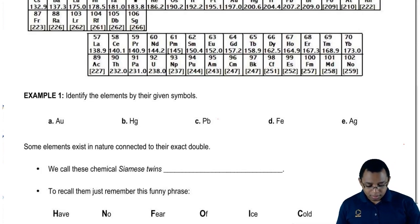Au just represents gold. The next one, Hg.